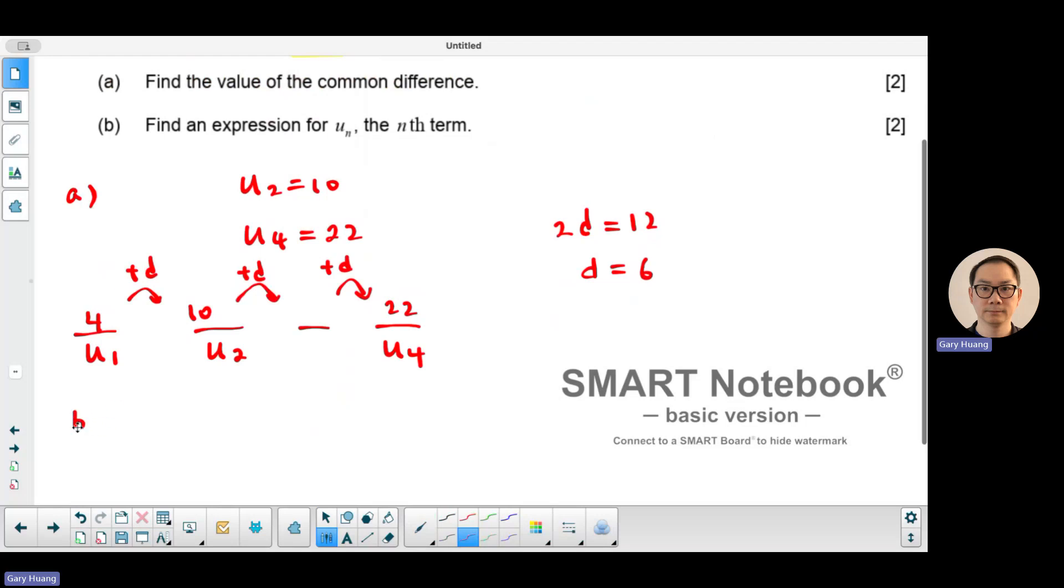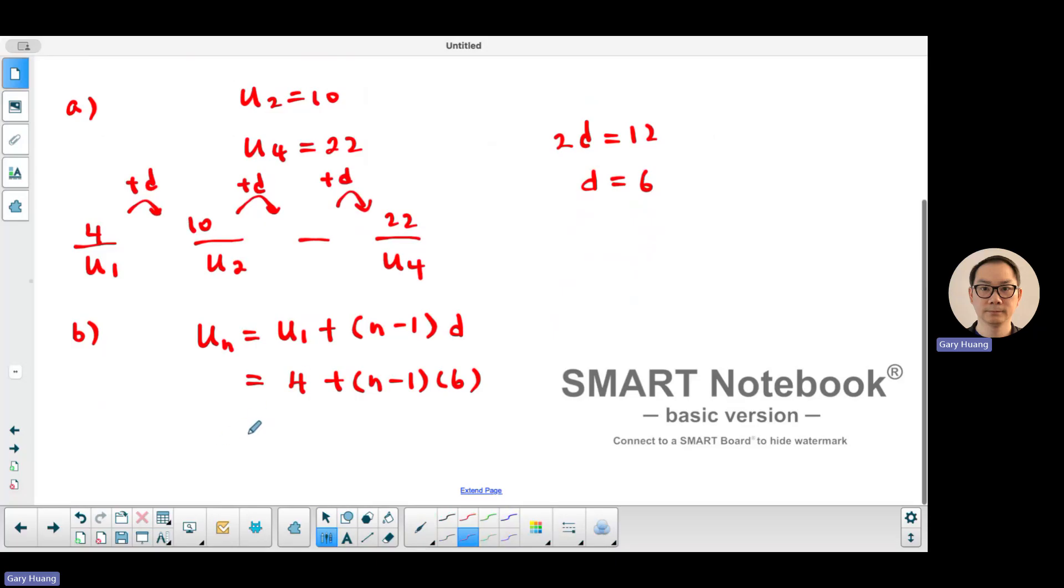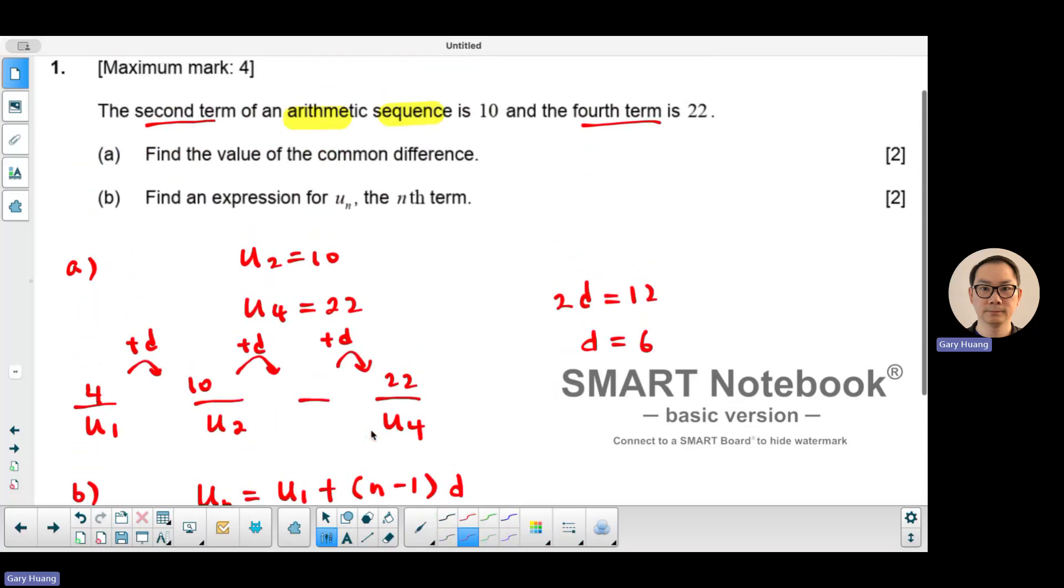For part B, you're asked to find the general term. Well, the formula for the general term is U1 plus n minus 1 times the common difference. So in this case, the first term 4 plus n minus 1 times the common difference 6. Expand and simplify, you're going to get 6n minus 2. And that's the answer for the first question.